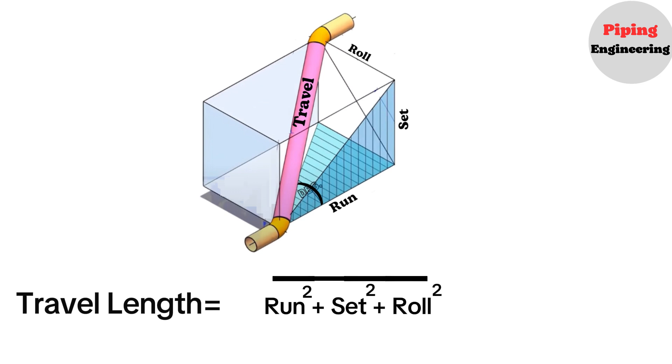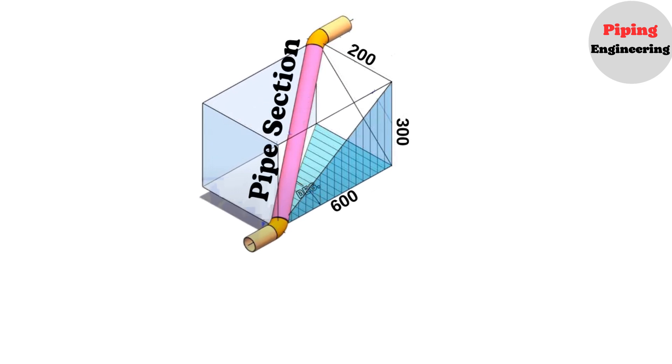Let's examine this method we learned on a simple example. Let's assume that the pipeline moves 600 mm eastwards, 300 mm upwards, and 200 mm northward. Now let's calculate the length of this pipe section.